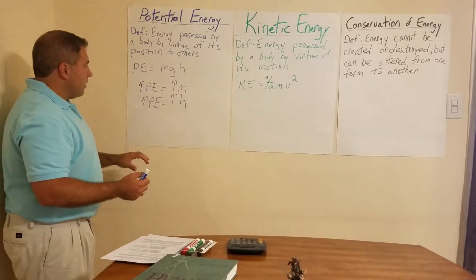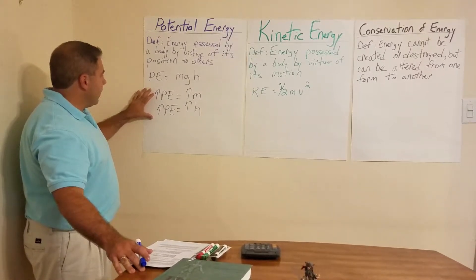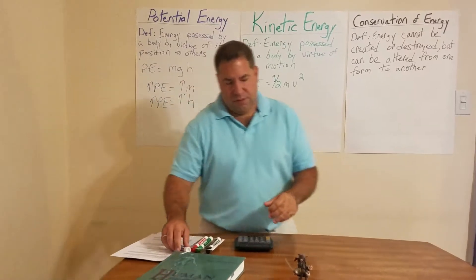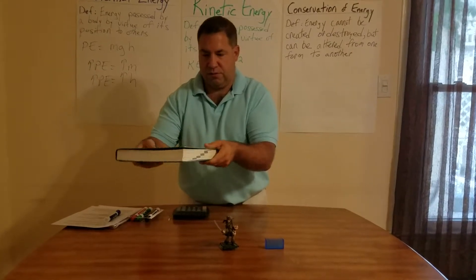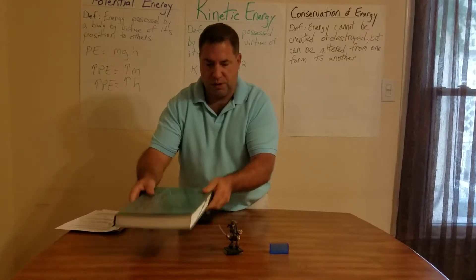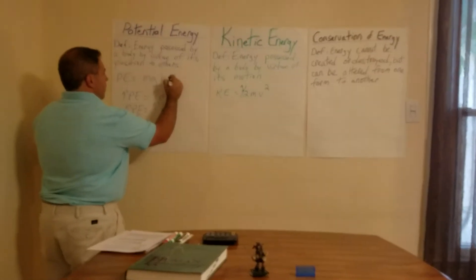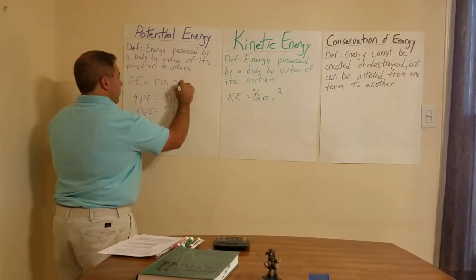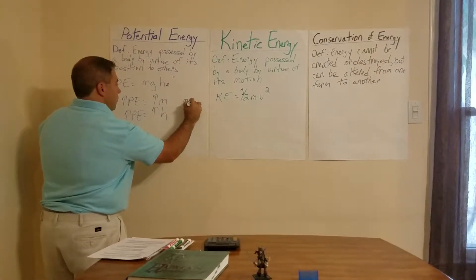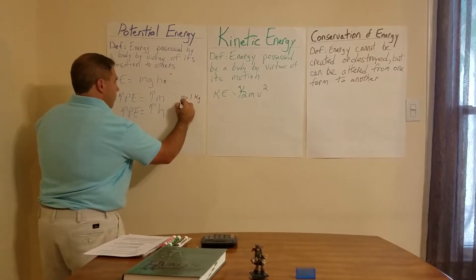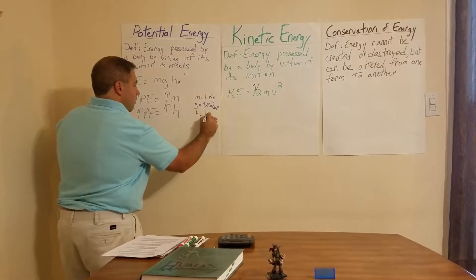I want to do a practice calculation so that when we do our homework and working class tomorrow, we know how to calculate potential energy. We're going to take the mass of the book — assume it is one kilogram — and assume we hold it one meter high. When we plug in our values: mass equals one kilogram, the gravitational force is 9.8 meters per second squared, and our height is one meter.